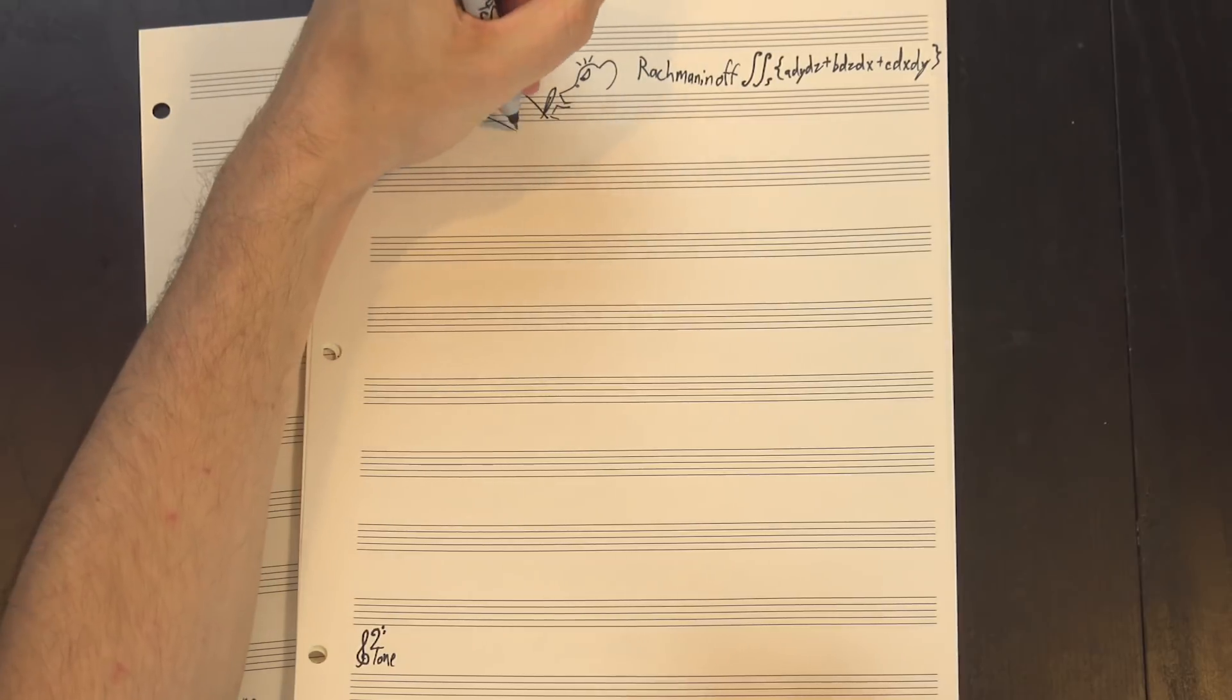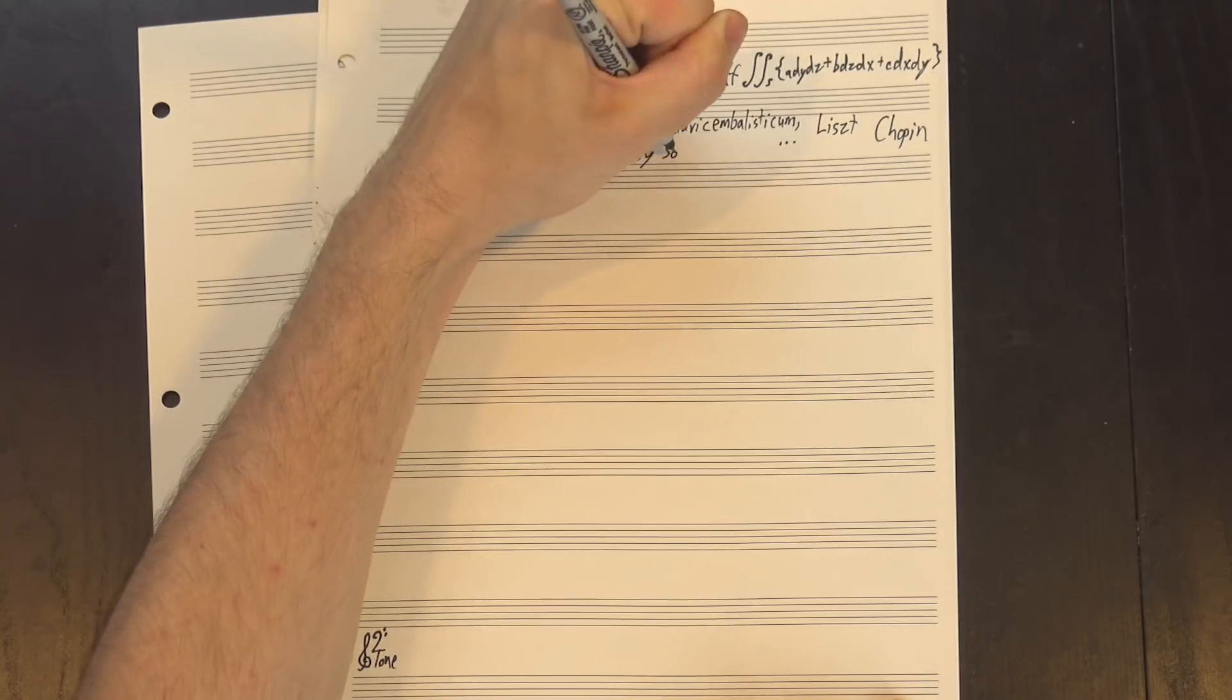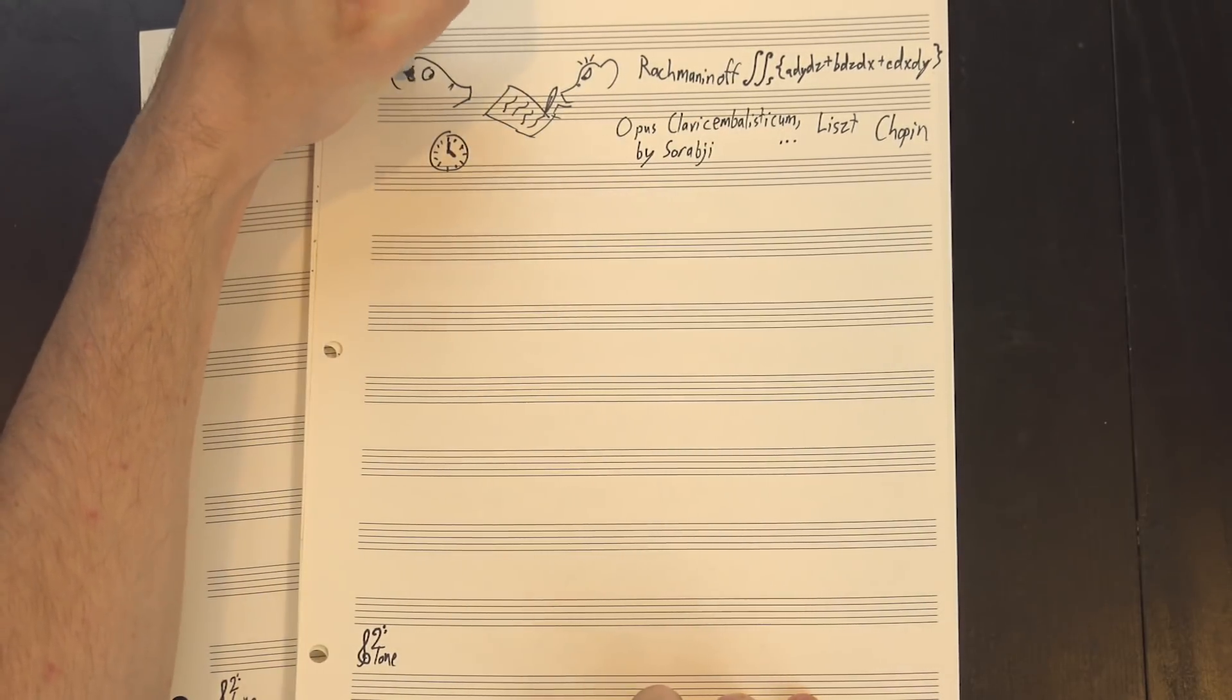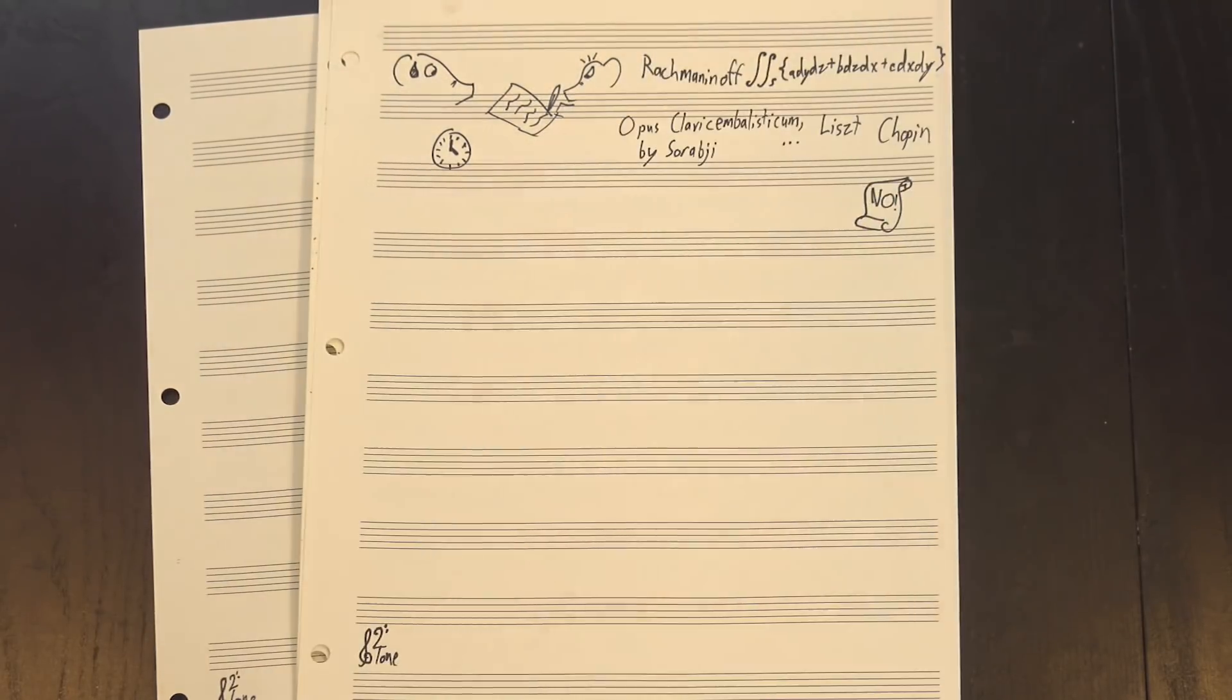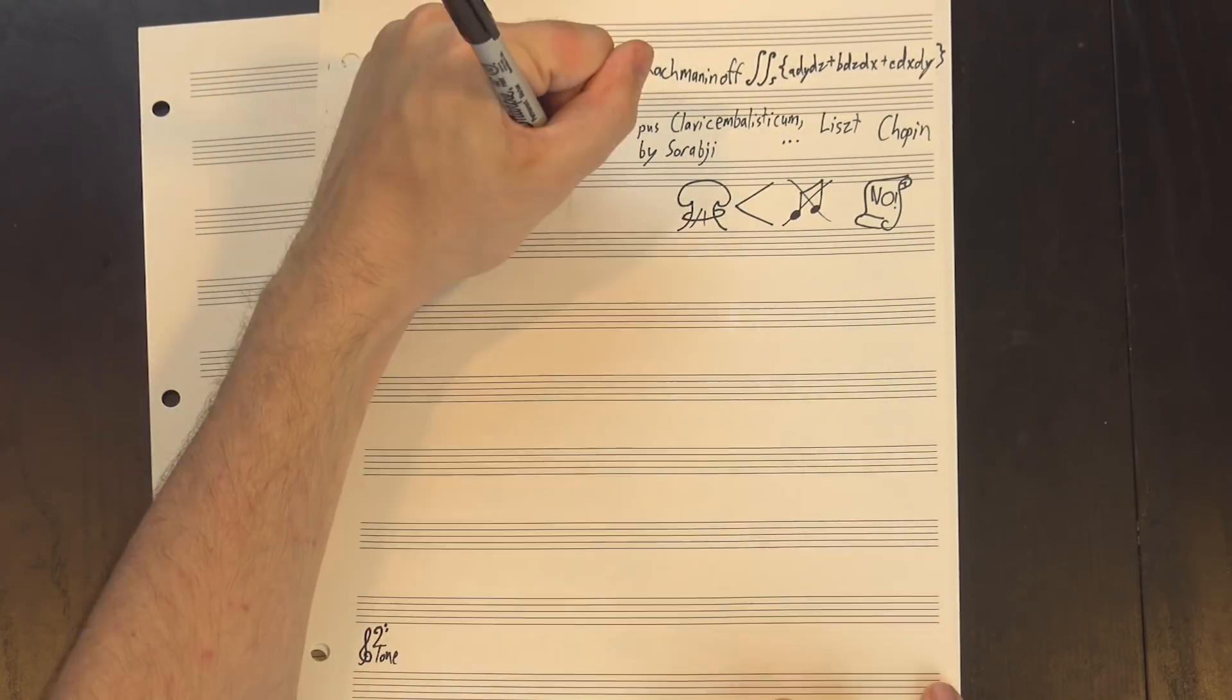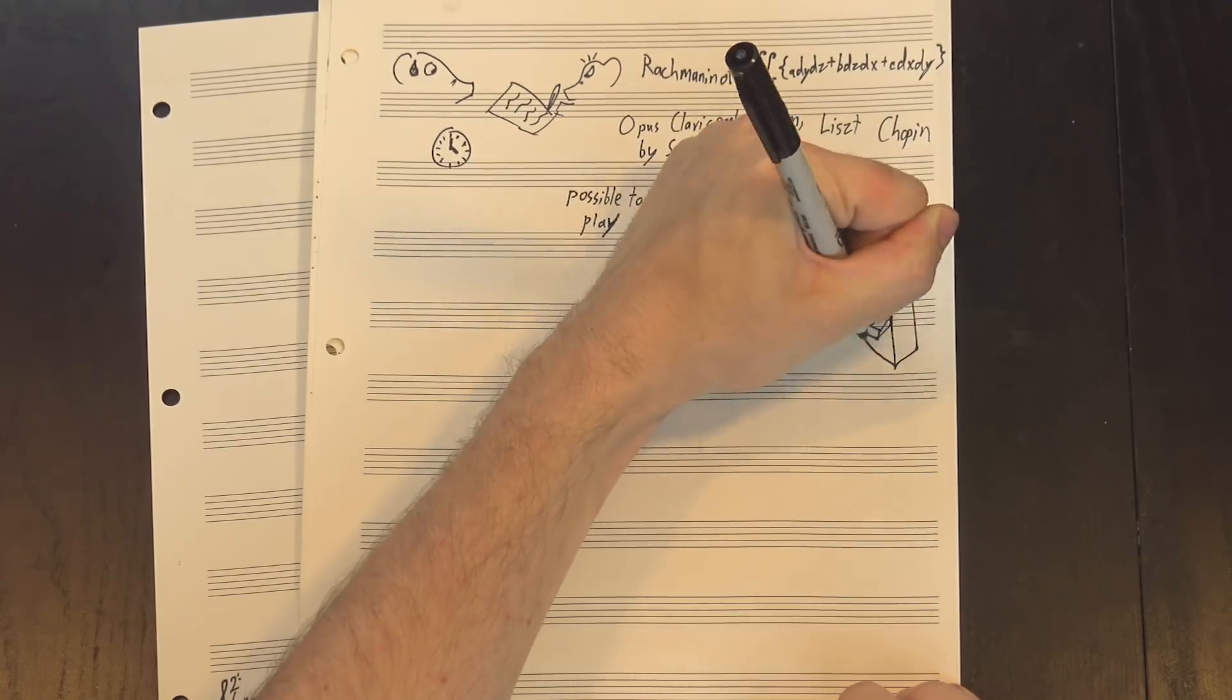Rachmaninoff is famous for his technically demanding compositions, as are Chopin, Liszt, and many others. Surabji's Opus Clavicembalisticum is a four-hour piece for solo piano filled with blazingly fast, wide-ranging counterpoint, and it's so hard to play that Surabji eventually banned public performances of it, declaring that no performance at all is vastly preferable to an obscene travesty. But it's still possible to play—a human being could do it if they were good enough at piano.